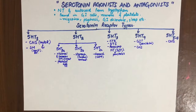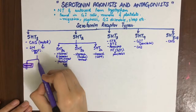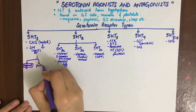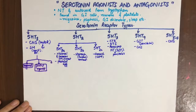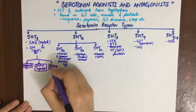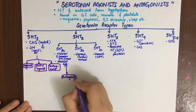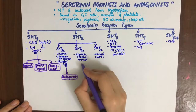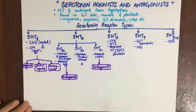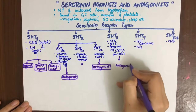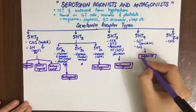Now we'll look at the drugs that act at all of these receptors. First we'll look at 5-HT1 agonists, then 5-HT1 partial agonists, and 5-HT1 antagonists. Then we'll look at 5-HT2 antagonists. There are no drugs for 5-HT2B. Then we'll look at 5-HT2C antagonists, 5-HT3 antagonists, and lastly 5-HT4 agonists.